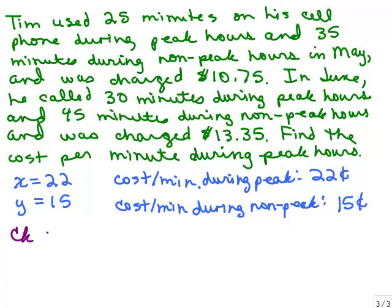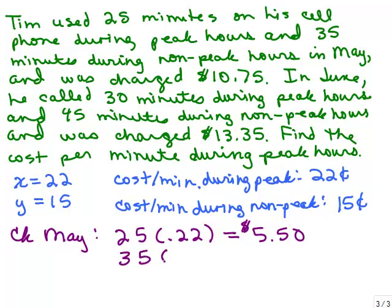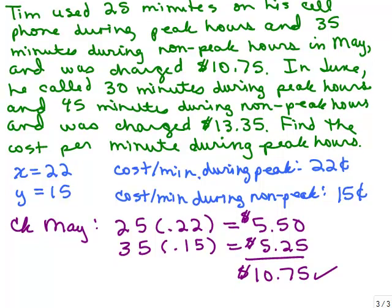Let's check May. He used 25 minutes, and each of those minutes was 22 cents. I'm going to do this in dollars and cents. 25 times 22 cents per minute, that gives you 550. He also used during May 35 minutes, but those were at the non-peak hour price, 15. Multiplying that out we have 525, and if we add up we've got 1075. He was charged 1075, so that certainly checks what was given in May.